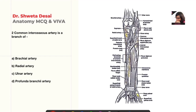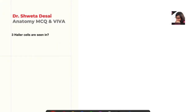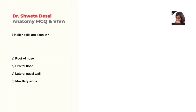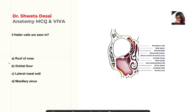Options: brachial artery, radial artery, ulnar artery, or profunda brachii artery. The correct answer is C, ulnar artery. It again divides into anterior and posterior interosseous artery. Haller cells are seen in the roof of nose, orbital floor, lateral nasal wall, or maxillary sinus. The correct answer is B, orbital floor. Onodi cells and Haller cells are ethmoidal cells; Haller cells lie in the floor of the orbit.